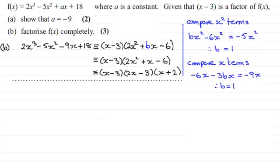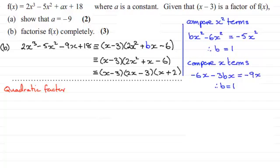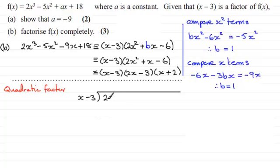Now there's another way to get the quadratic factor 2x squared plus x minus 6 — it's a slightly slower way, but I'll show you using algebraic long division. Normally I'd write this in the margin, but I'll keep it on one screen. We divide x minus 3 into the cubic polynomial 2x cubed minus 5x squared minus 9x plus 18, which will then give us the quadratic factor.